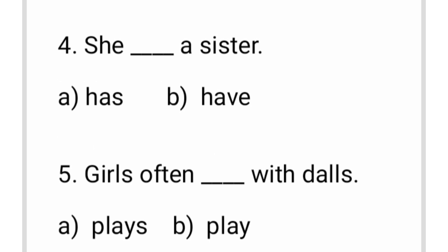In this sentence, the subject is 'she'. Remember: when the subject is 'he', 'she', or 'it', we use 'has'. When the subject is 'you', 'we', or 'they', we use 'have'. Here the subject is 'she', so we use 'has'. The answer to question four is option A: 'She has a sister'.